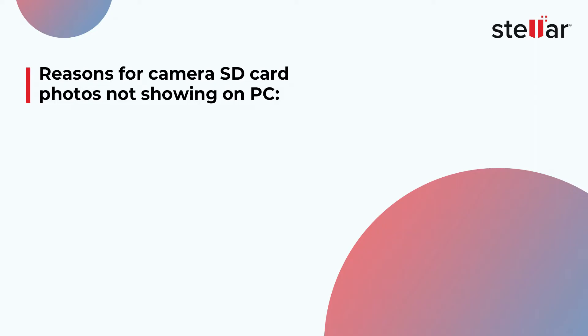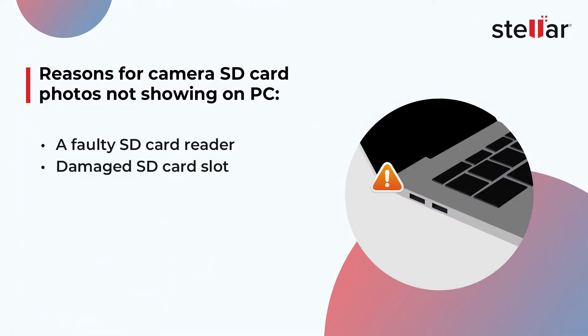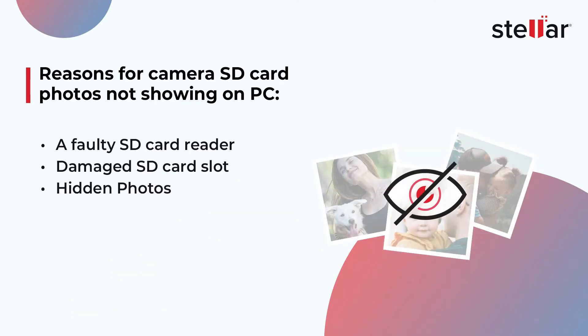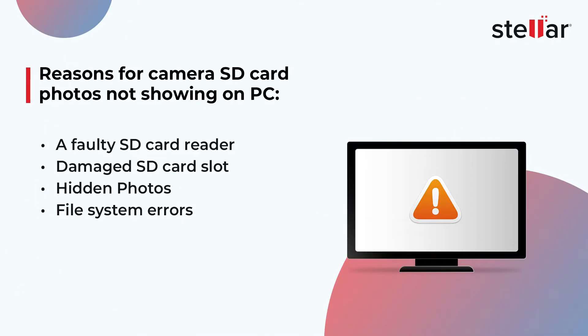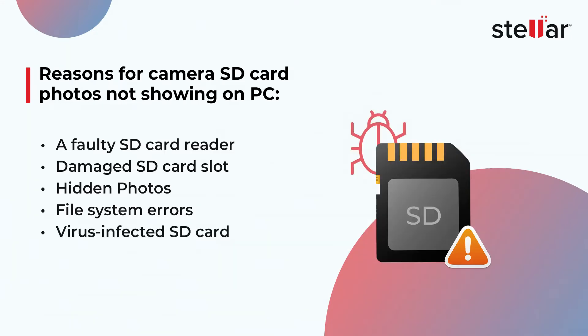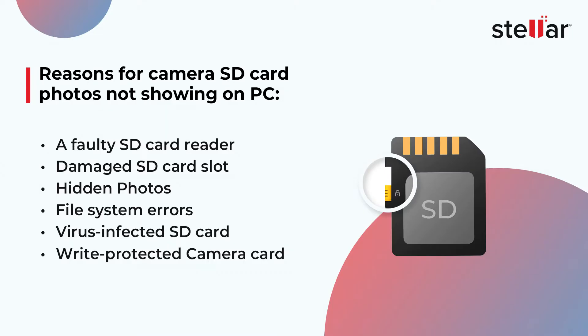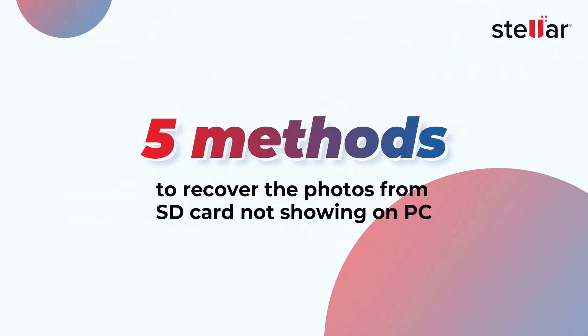Here are some of the reasons for camera SD card photos not showing on PC. It could be due to a faulty SD card reader or damaged SD card slot, or maybe photos are hidden. File system errors can also be the reason, or your SD card got virus infected, or your camera SD card is write-protected. Whatever the reason is, no need to panic as you can easily resolve this error. To guide you, we have listed five different methods to recover the photos from SD card not showing on PC.